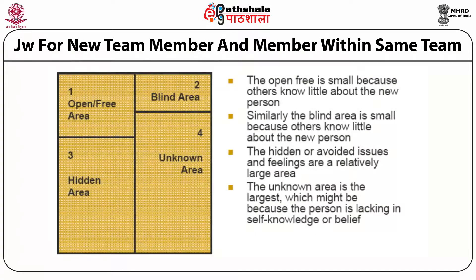For a new team member within the same team, the open area is small because others know little about the new person. Similarly, the blind area is small because others know little about the new person. The hidden or avoided issues and feelings are a relatively larger area, and the unknown area is the largest, which might be because the person is lacking in self-knowledge or belief.